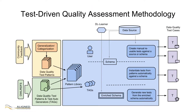RDFUnit is a flexible RDF data unit testing framework implementing the test-driven quality assessment methodology. It can test small in-memory RDF triple collections as well as large datasets containing billions of facts such as DBpedia. DBpedia uses RDFUnit to validate instance data and ontology mappings using the DBpedia ontology as input.